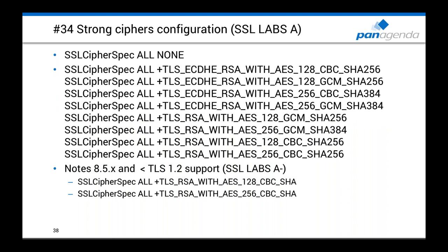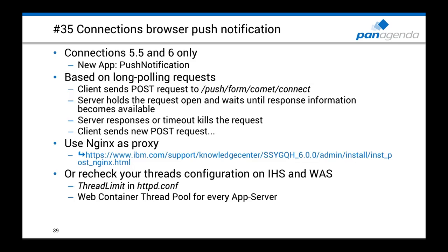Tip 34: HTTP server security. If your environment is externally accessible on the internet without a proxy in front, ensure your HTTP server configuration is secure. Recheck your cipher configuration — the first configuration shown achieves an SSL Labs A+ rating. The last two ciphers are needed to support Connections with TLS 1.1 or earlier for Notes 8.5 clients — with those ciphers you'll get SSL Labs A- rating, which is still much better than the default.